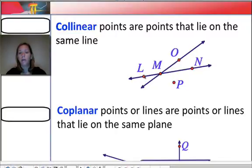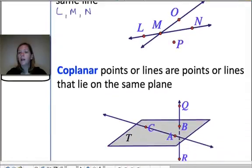So for example, we can see that L, M, and N are all on that second line here. So we could say L, M, and N are collinear points.